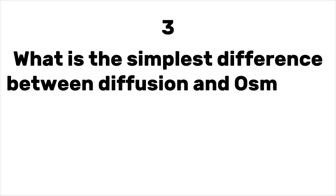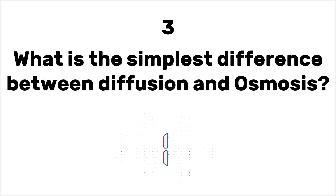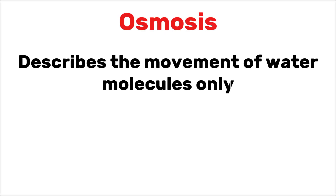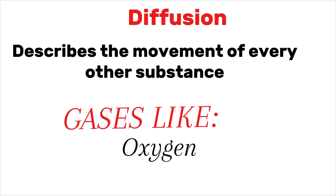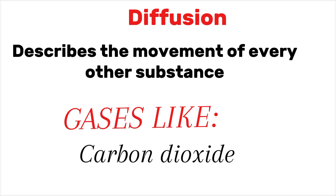Number 3. What is the simplest difference between diffusion and osmosis? Osmosis describes the movement of water molecules only, while diffusion describes the movement of every other substance, which includes gases like oxygen, carbon dioxide, and nitrogen.